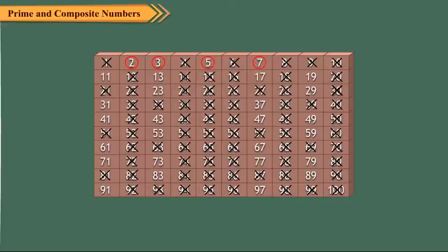7 is also a prime number, so encircle 7. Cross out the multiples of 7 as these are composite numbers. Now encircle each one of the remaining numbers. All the encircled numbers are the prime numbers. There are 25 prime numbers between 1 and 100.